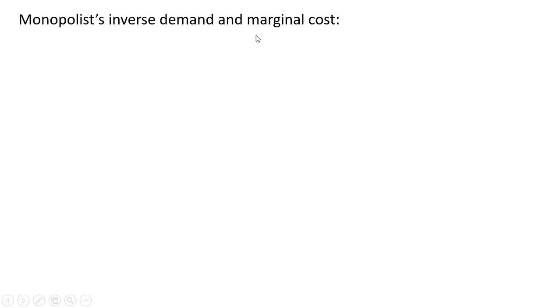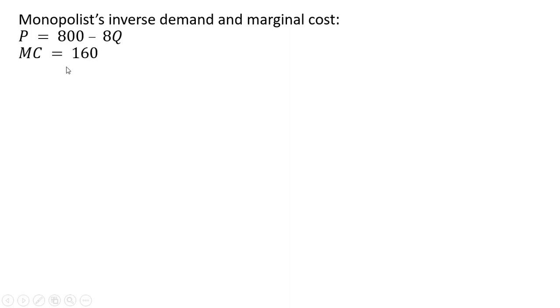Here is a monopolist's inverse demand and marginal cost. The inverse market demand is price equals 800 minus 8q, and the marginal cost of production is constant at $160.